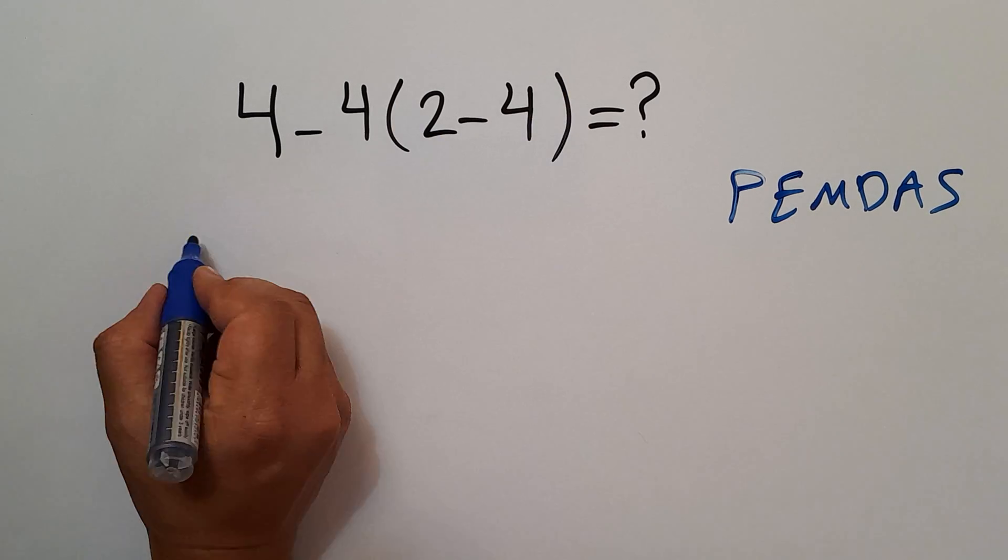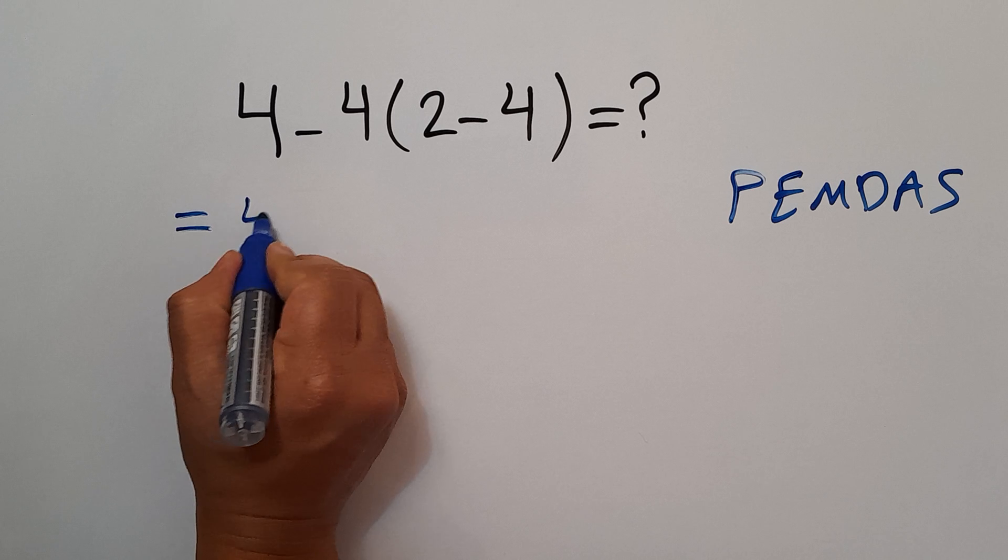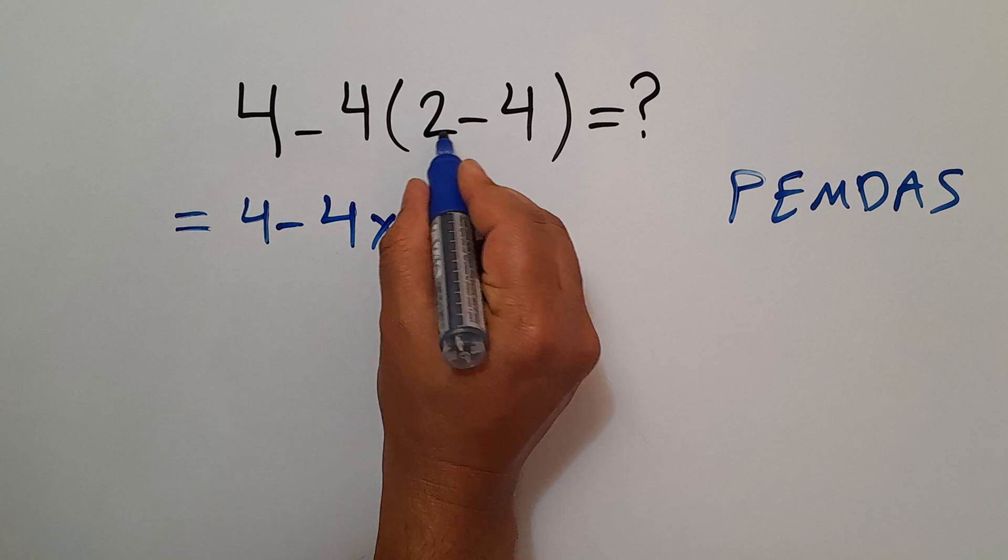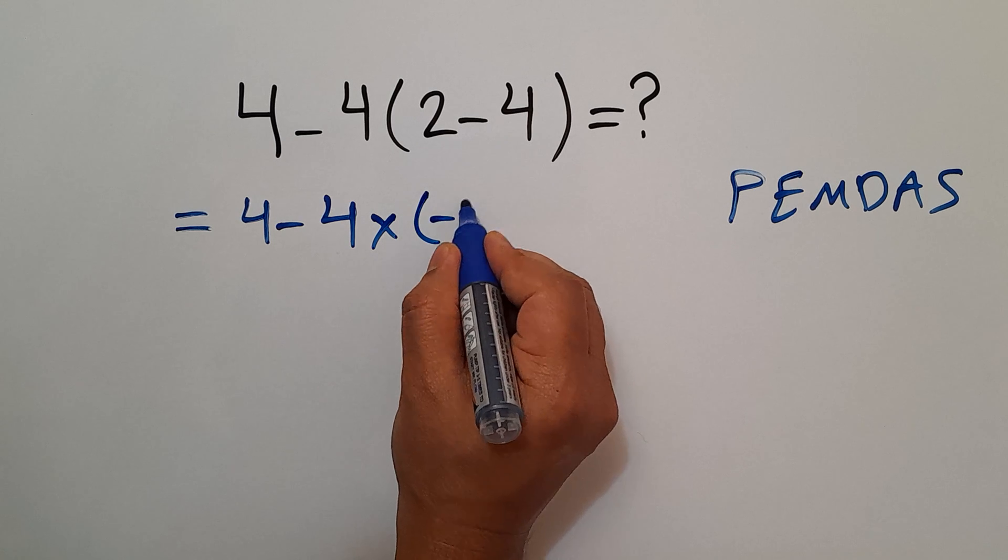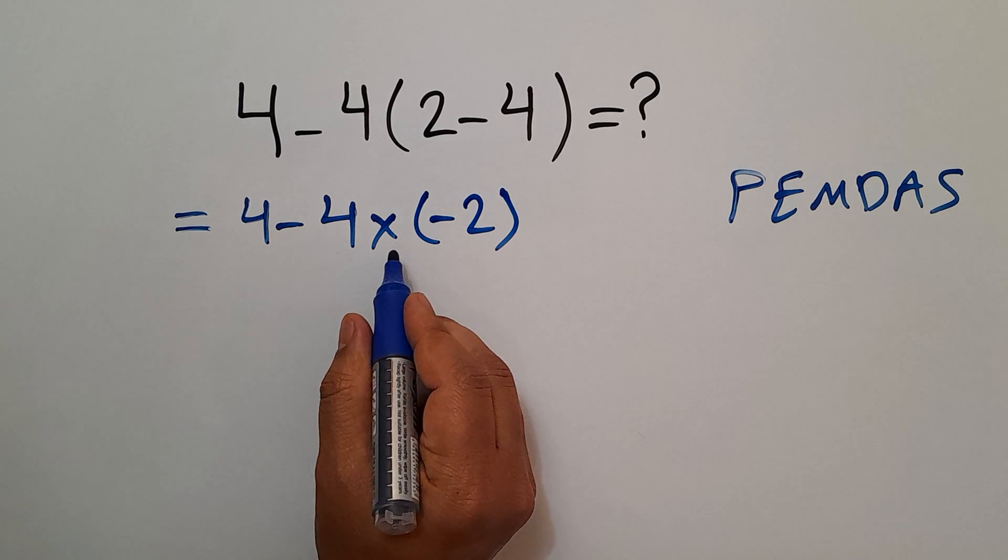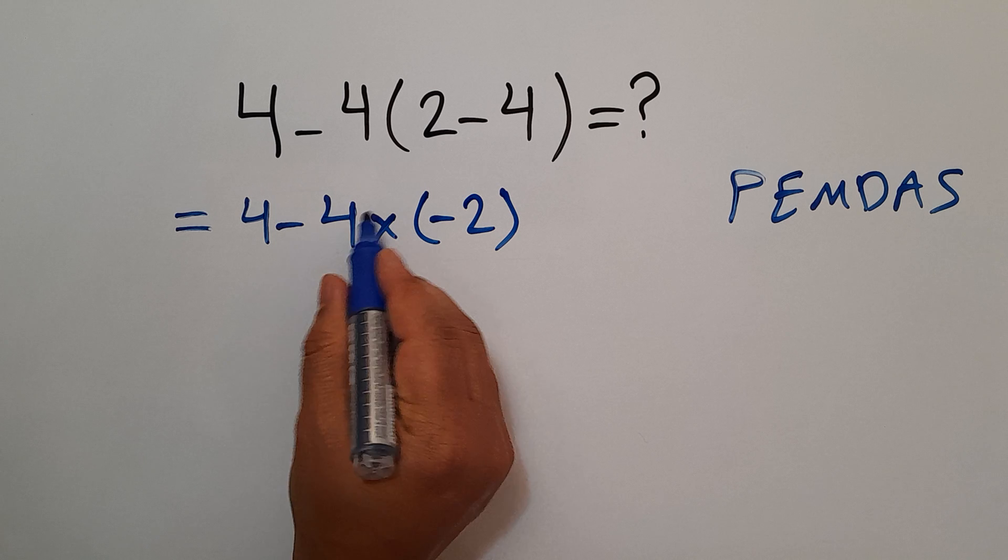these parentheses. 2 minus 4 gives us negative 2. So we have 4 minus 4 times negative 2. Now we first do this multiplication.